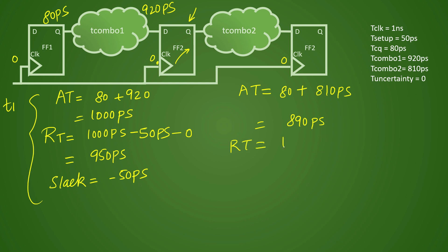And again, required time will be almost similar. Why? Because T clock is same and T setup is also same. We do not have any uncertainty, so that is again 950 picoseconds. Slack, if you calculate, will come out to be 950 minus 890, that will be 60 picoseconds.